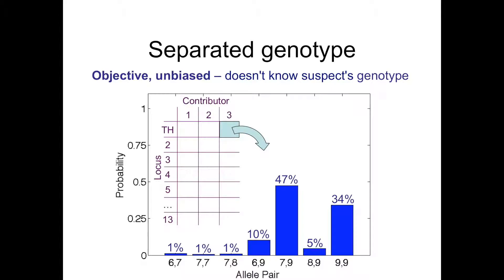This is what a separated genotype looks like. The table in the center shows 13 genetic loci, and at each of the three assumed contributors — so 39 potential locus-contributor pairs — there's a genotype. In blue, a bar graph shows that out of 100 or so possible allele pairs, the data has focused the probability onto about half a dozen possibilities, with different amounts of probability indicated on the left. This is an objective procedure unbiased by the suspect's genotype and unbiased by an analyst clicking on peaks. Data goes into a machine and is analyzed automatically, which helps workflow and objectivity.